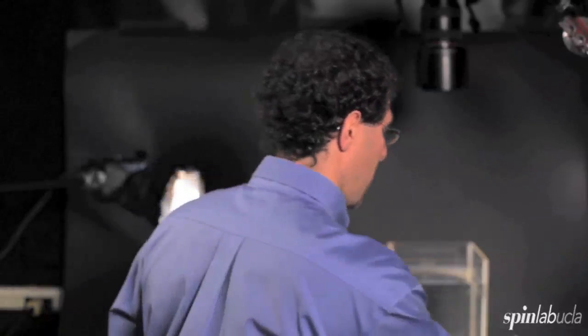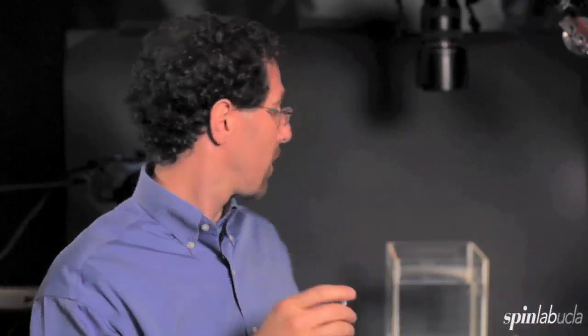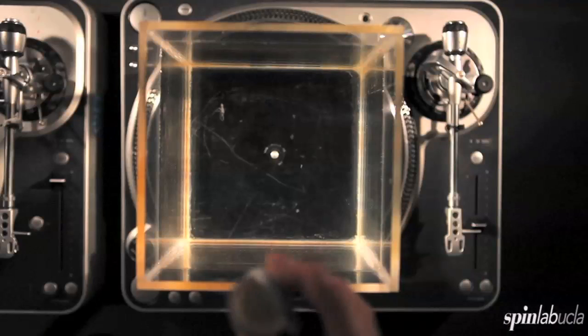We're going to first do an experiment where I just take a packet of creamer, half and half. This is colder and denser than the water in this tank. And this dense creamer is going to sink, dense things sink. So this is going to sink through the water and we're going to see how it does so.